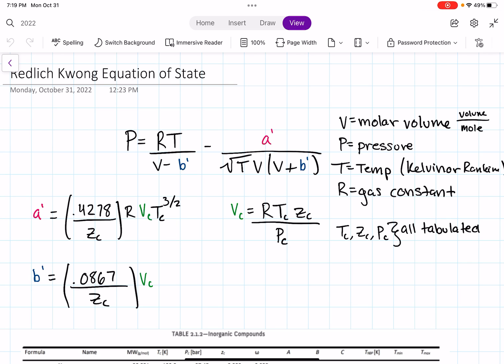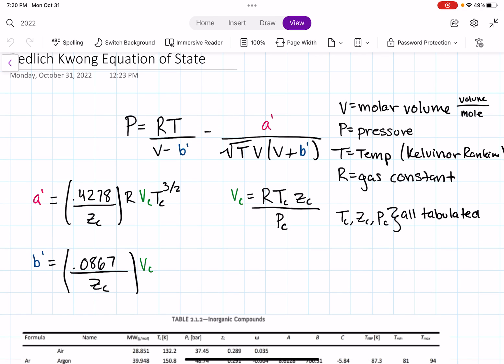In this video, we are going to learn how to use the Relic-Kwong equation of state in order to solve thermodynamic problems. But before we do so, we have to know what the formula for Relic-Kwong is. So here it is. P stands for the pressure. The V is not volume, it's molar volume.